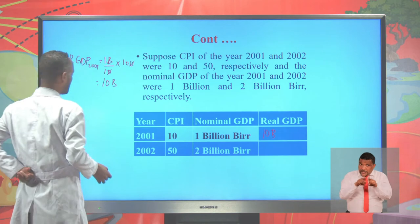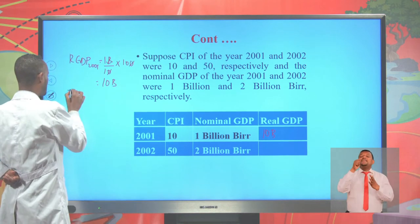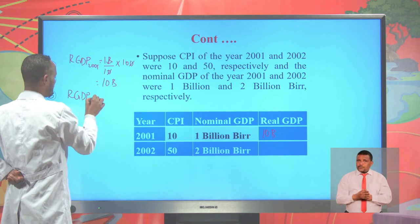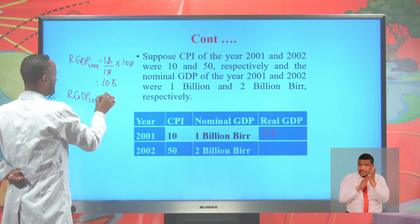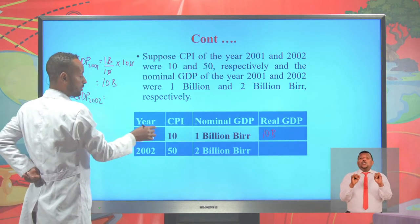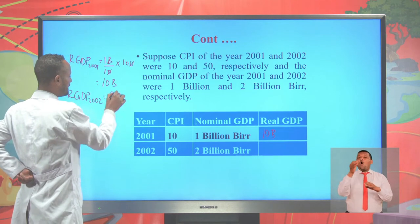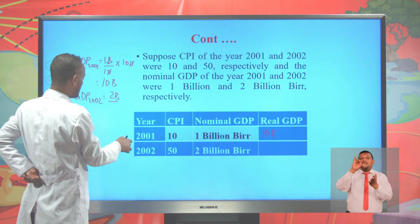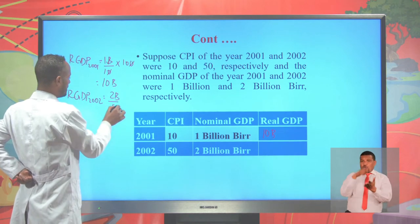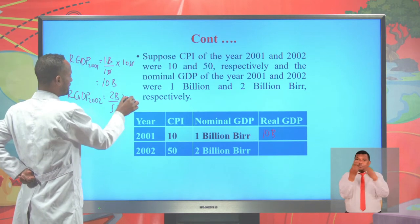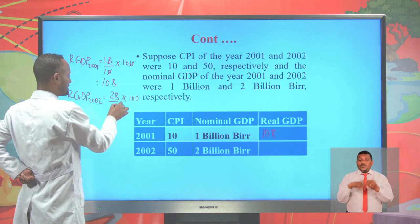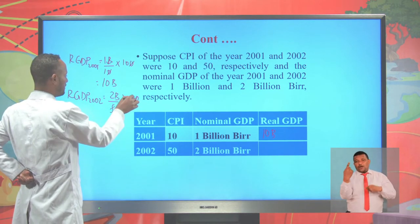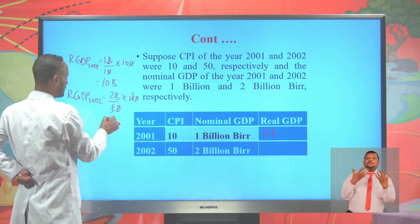Similarly, we can calculate the real GDP of the year 2002. It is calculated by dividing the nominal GDP of 2002, which is 2 billion, divided by the consumer price index of 50, multiplied by 100. This gives us 4 billion. So the real GDP of the year 2002 is 4 billion.